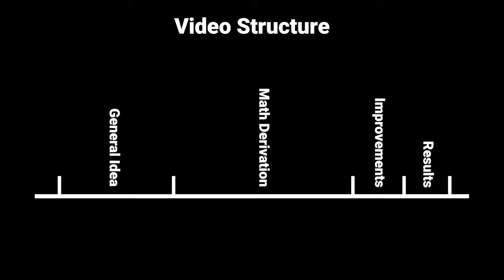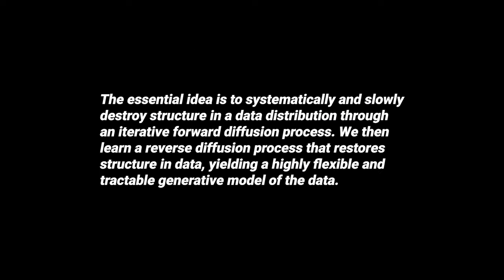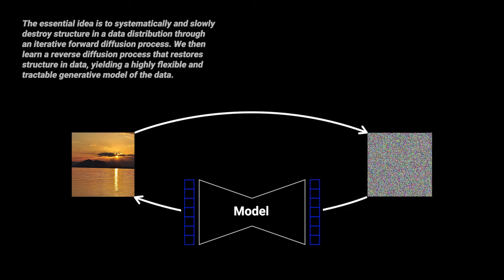One side note: please forgive me if I won't go into every single formula in detail, since this would go beyond the scope of this video. Feel free to use the timestamps in the description to go to the parts you're most interested in. The 2015 paper described the diffusion model as follows: the essential idea is to systematically and slowly destroy structure in a data distribution through an iterative forward diffusion process. We then learn a reverse diffusion process that restores structure in data, yielding a highly flexible and tractable generative model.